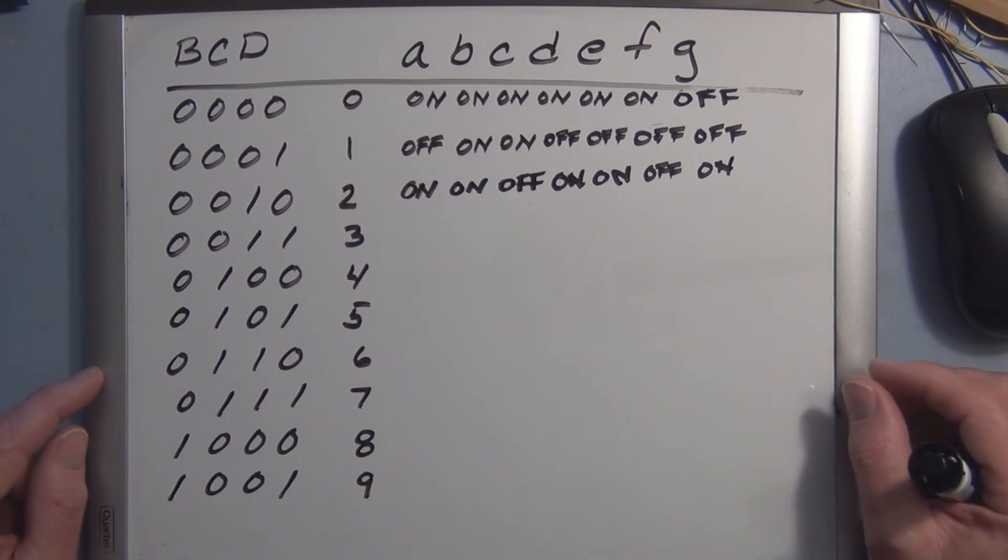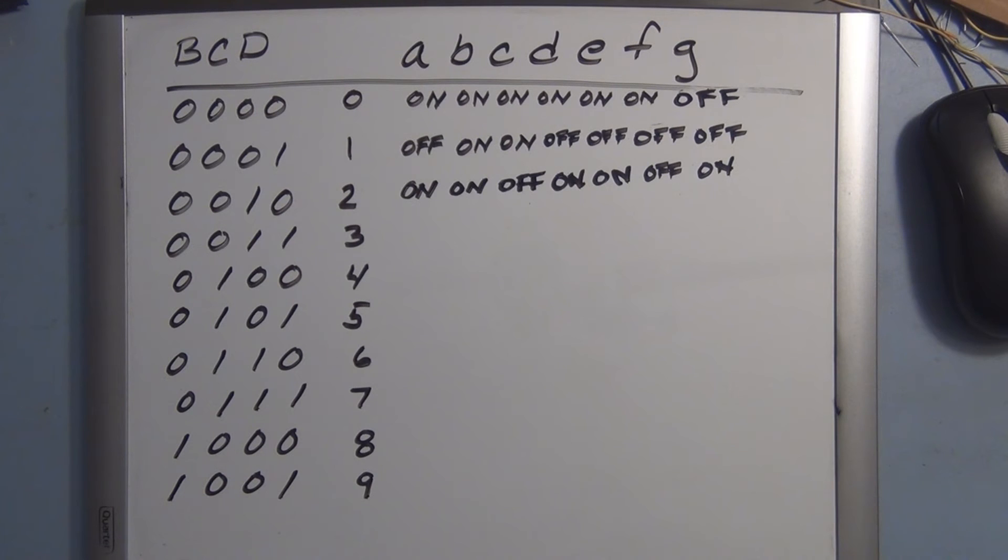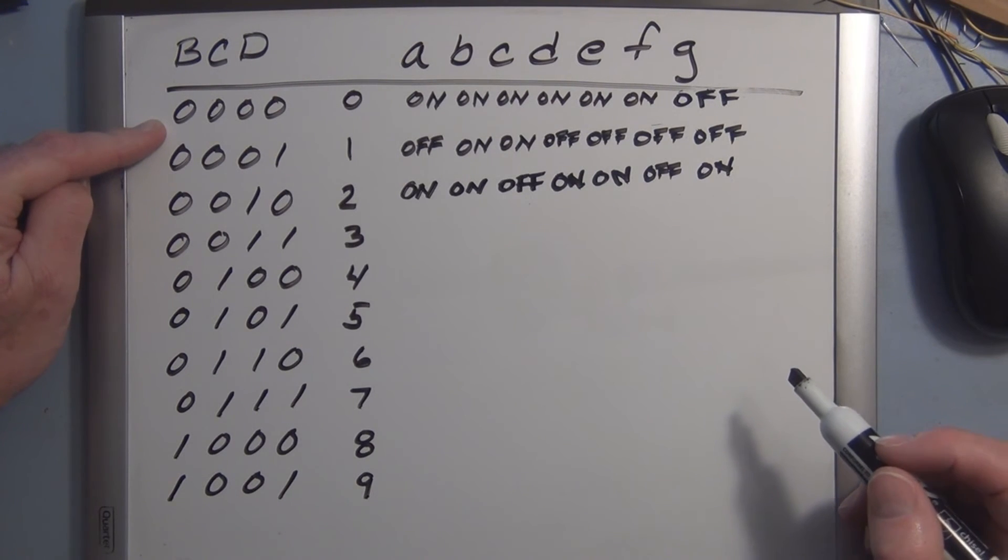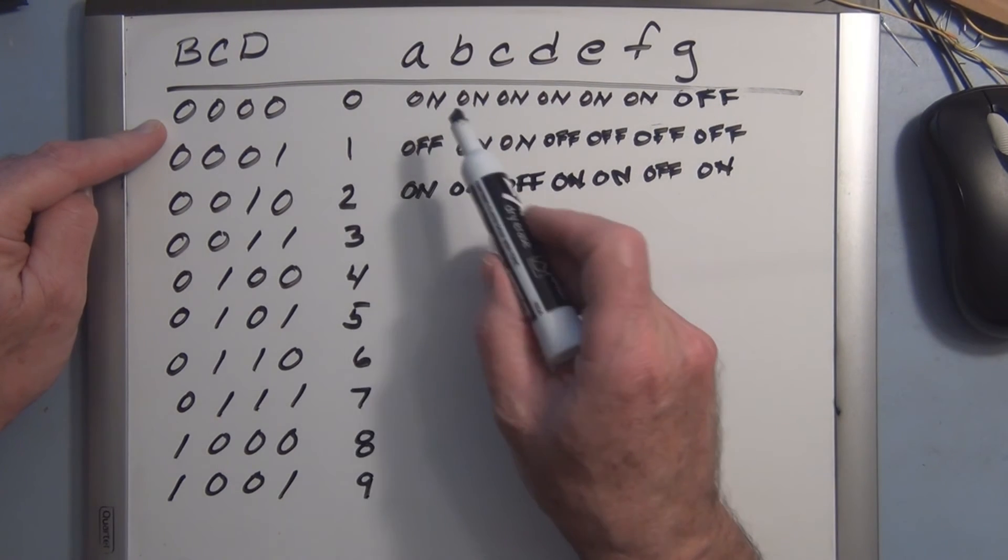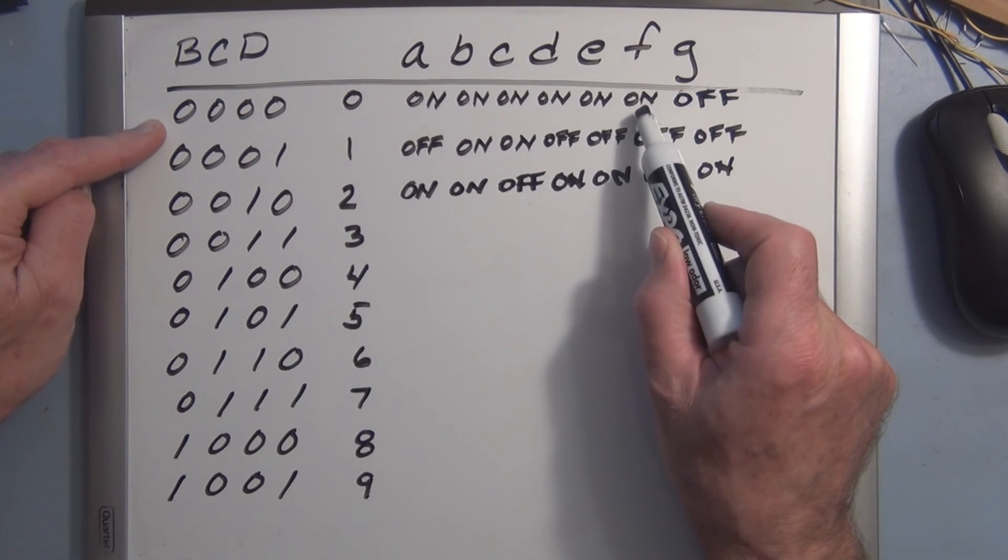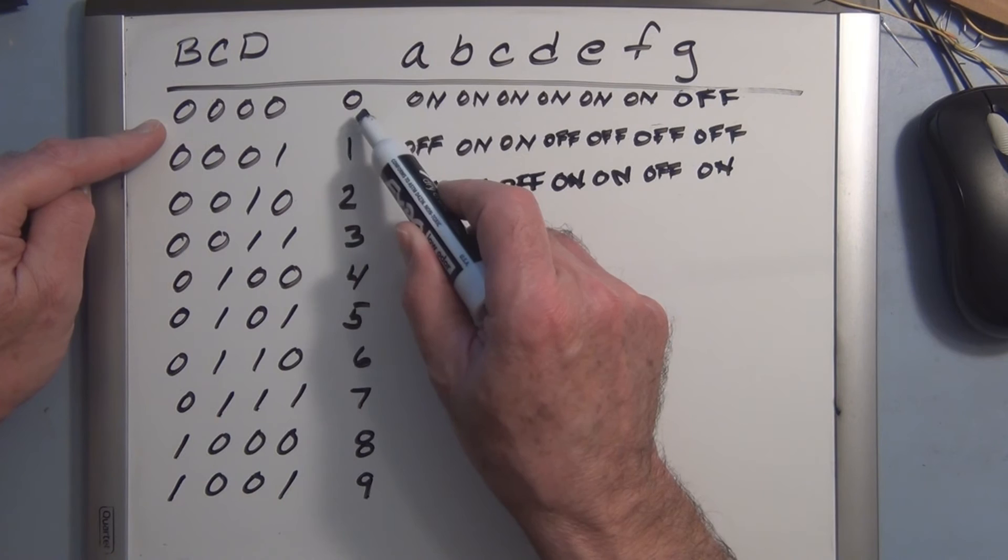So when they design the 7447, the BCD to seven segment display decoder, they have to do the same thing that you would do or that we've done for designing the full adder. And that is, they have to create a truth table. In this case, you have A, B, C, D input, and then you have to ask yourself: what segments do I need to turn on to create this decimal number on the display?